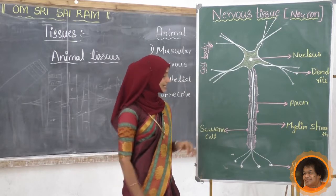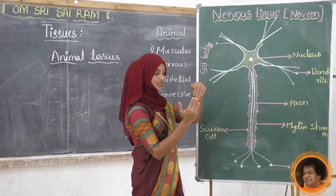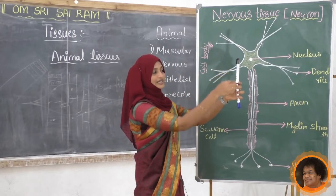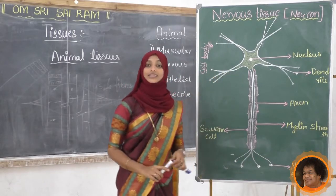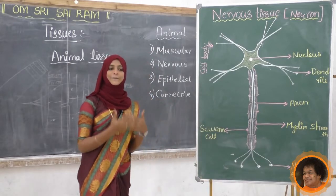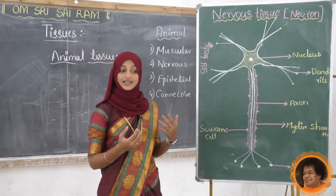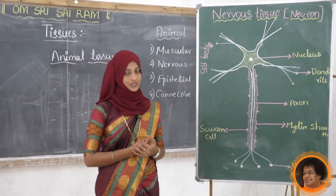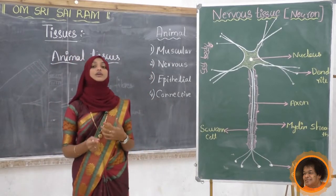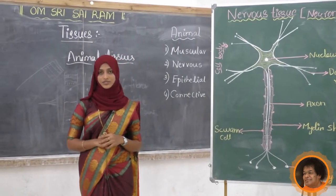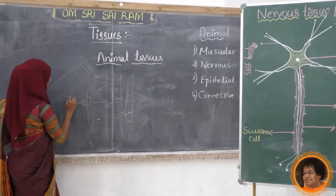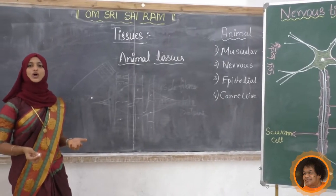Synapse means the junction where two neurons join one by one. The neuron impulse allows us to move our muscles when we want to respond to a stimulus. This is an important question for exams - they will ask you to draw the diagram of a neuron. I will teach you how to draw it - it is a very simple diagram.